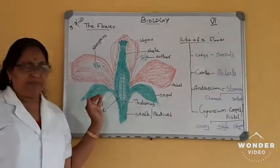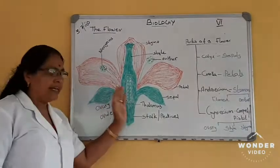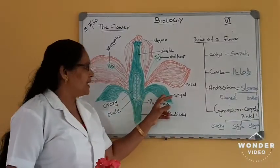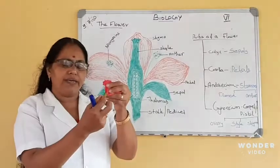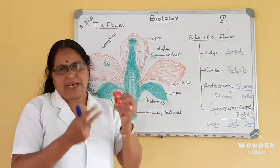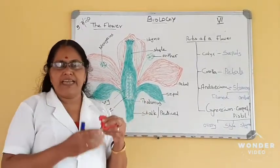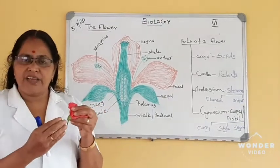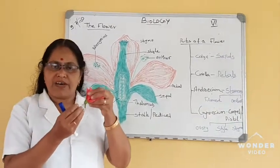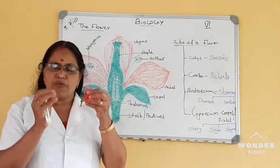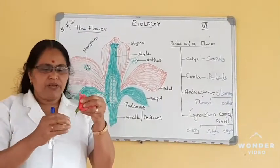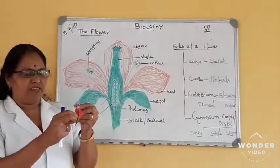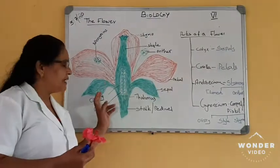The outermost part of the flower is the calyx — they are green in colour. The calyx consists of sepals. This green part all together is called calyx and each one is called a sepal. Sepals are green in colour because of having chlorophyll. Since they contain chlorophyll, their main function is to synthesize food. They also protect the flower when it is in bud condition. So the calyx consists of sepals, and these sepals collectively called the calyx.